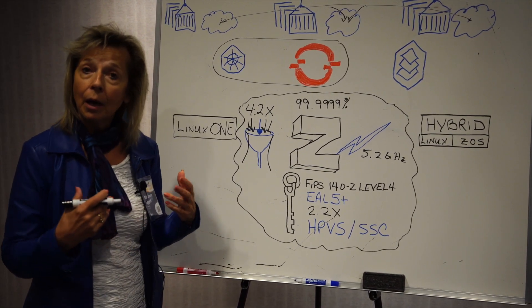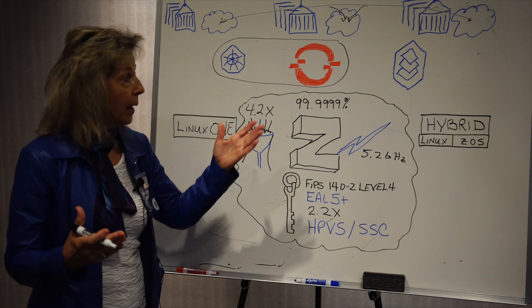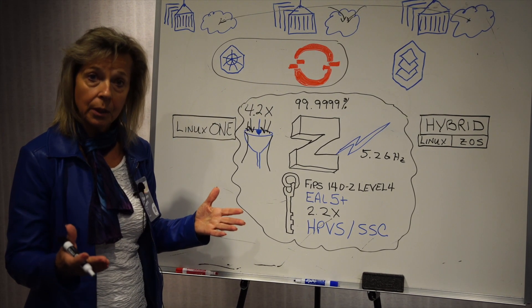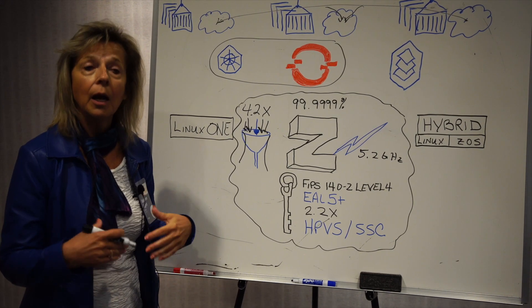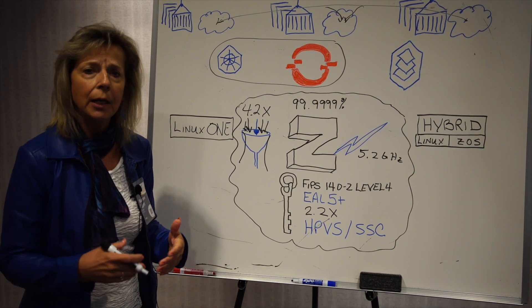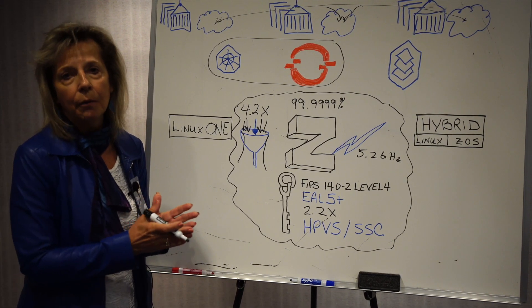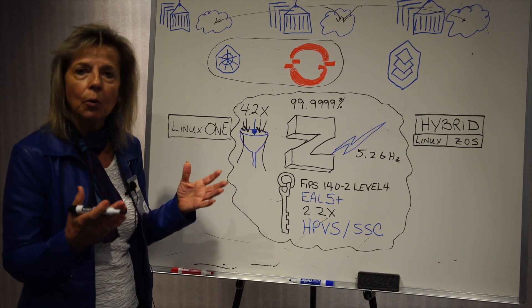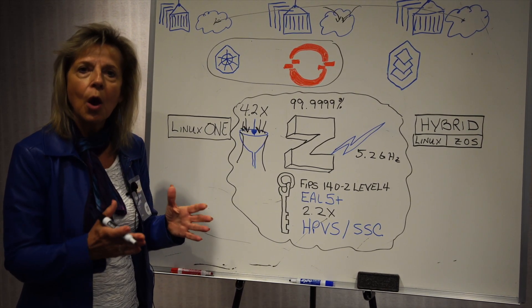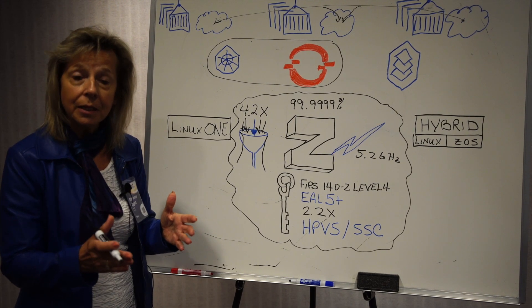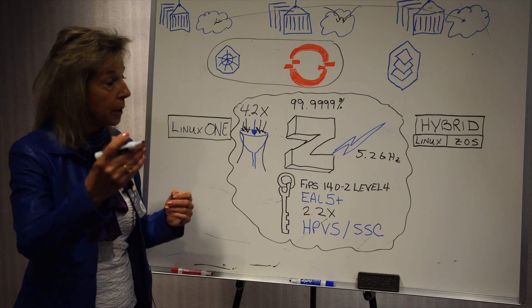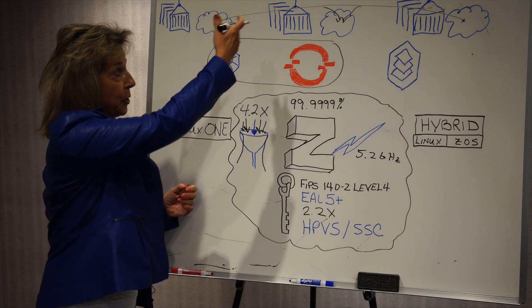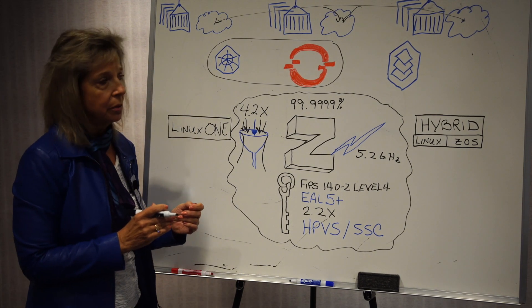Red Hat OpenShift offers enterprise support for this environment, just like it did with the Linux operating system. It enhances the environment to make it enterprise-ready, including the networks, container registry, and so on — all making it easy to implement and manage containers in your environment.